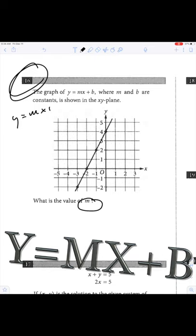y equals mx plus b, this is always your slope. So all we have to do is figure out rise over run.